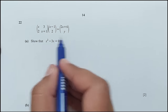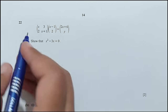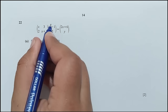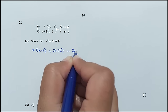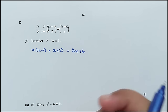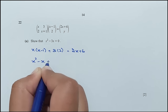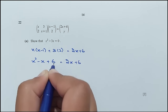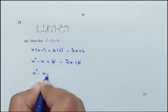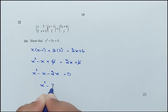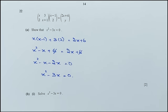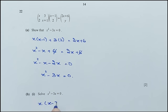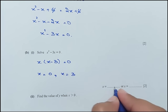Question number 22: show that X² minus 3X equals 0 using the matrix. The product rule gives X(X−1) plus 3(2) equals 2X plus 6. So X² minus X plus 6 equals 2X plus 6. The 6 cancels, and X² minus X minus 2X equals 0, giving X² minus 3X equals 0. Proved. For part B: solving X² minus 3X = 0, take X common: X(X minus 3) = 0, so X equals 0 or X equals 3.